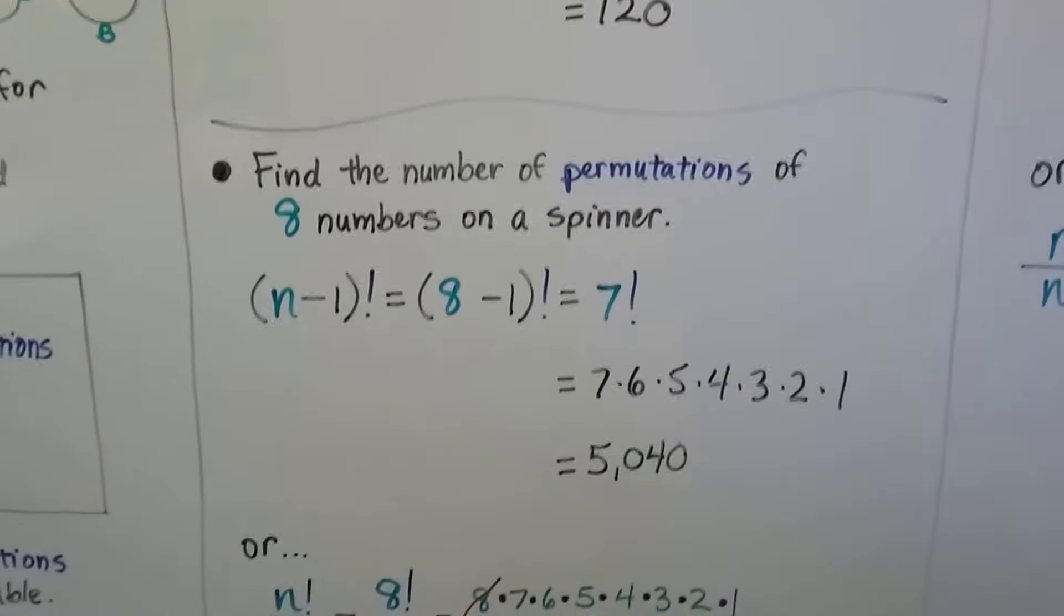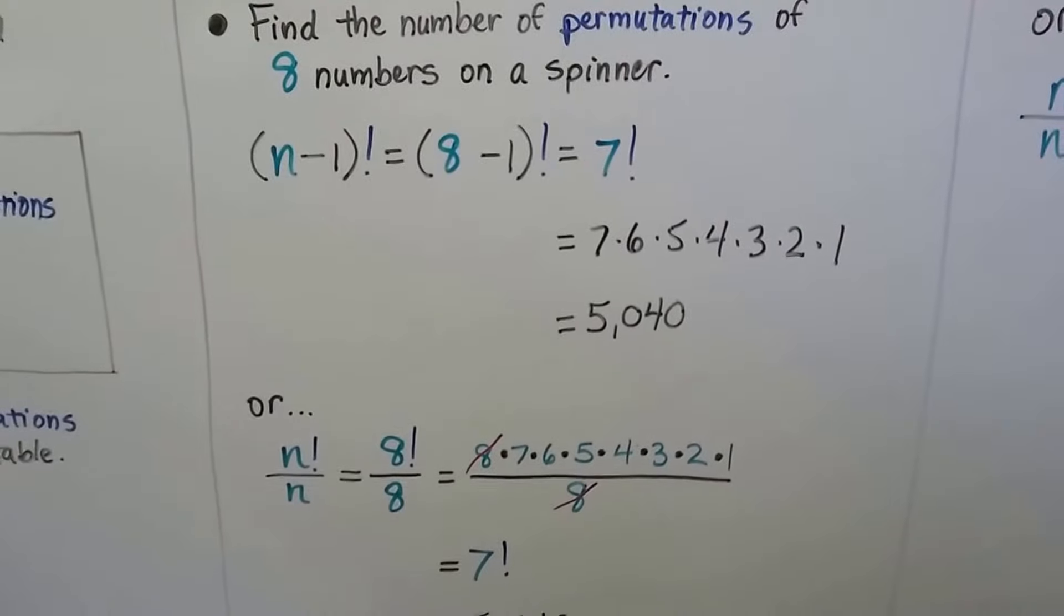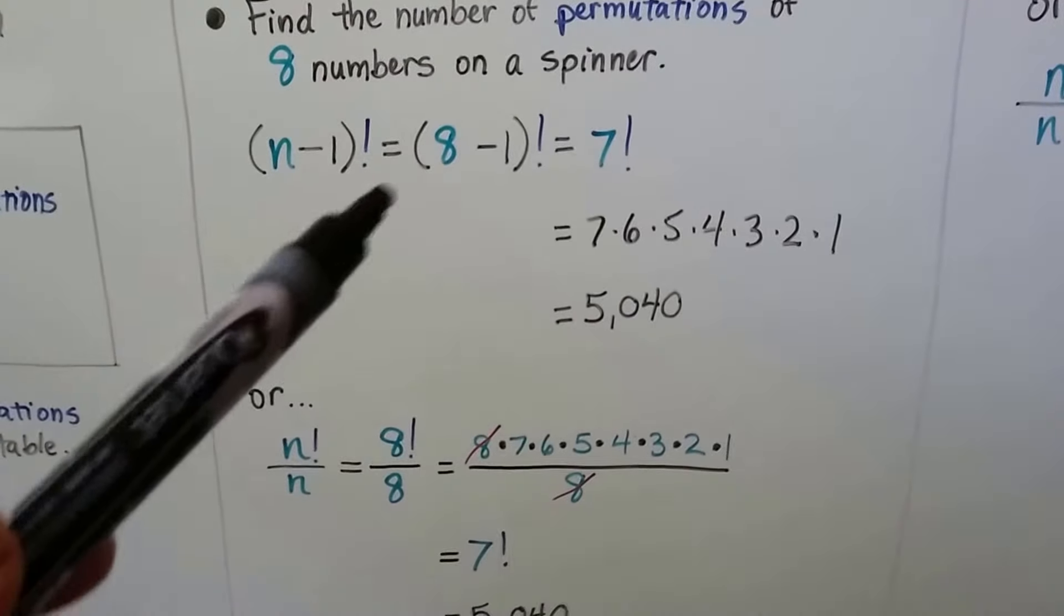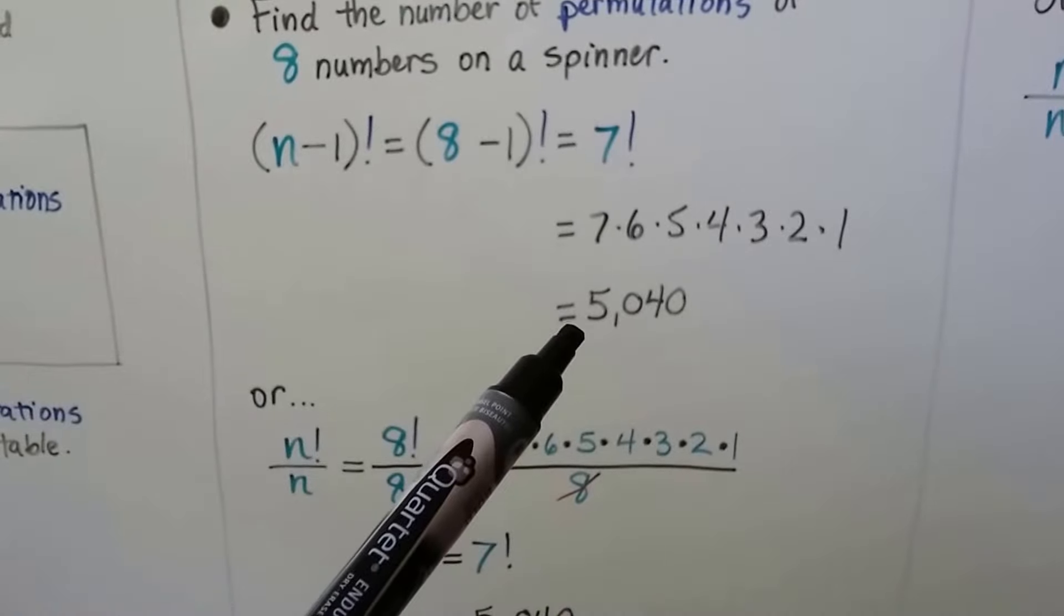We can find the number of permutations of 8 numbers on a spinner. Spinners are circular. We do (8-1) factorial equals 7 factorial, which is 5,040.